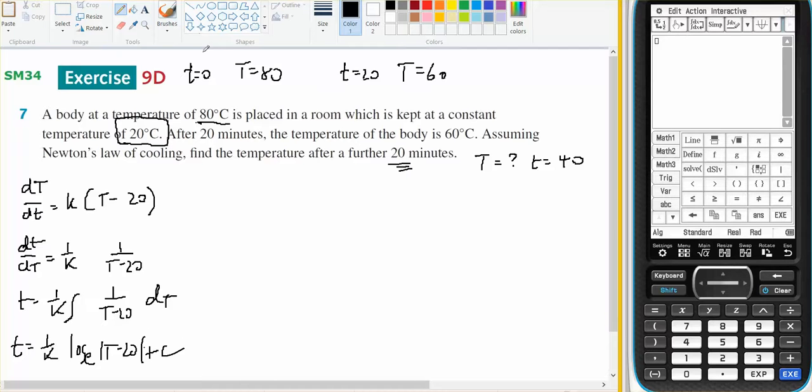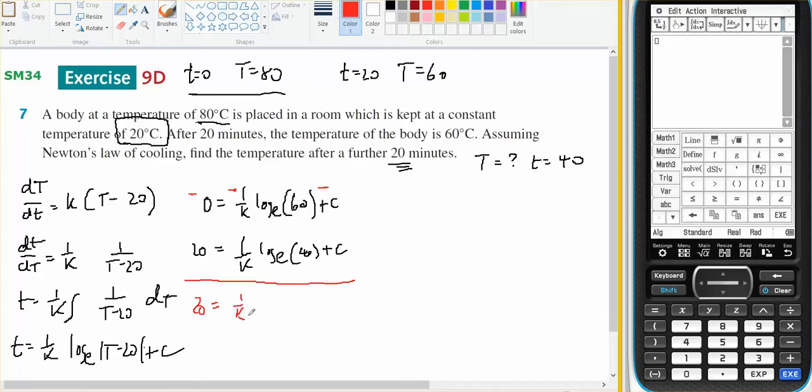Using my first piece of information, I know that zero equals one on K, log base E of 80 minus 20 or 60 plus C. And using my second piece of information, I would use subtraction to subtract the first one from the second so the C's disappear, and that will give me 20 equals one on K, log base E of 60 minus 20 or 40 plus C.